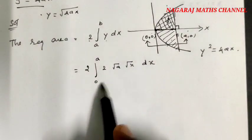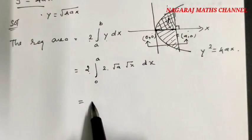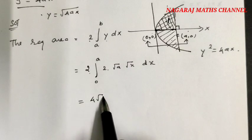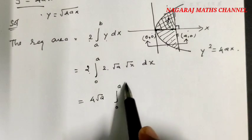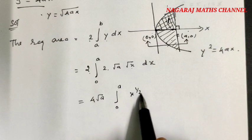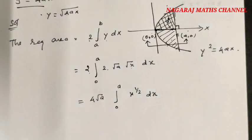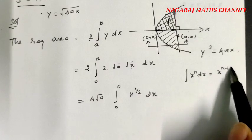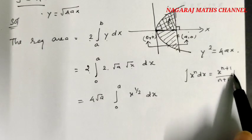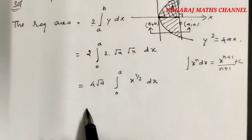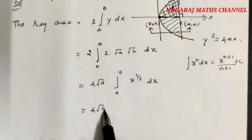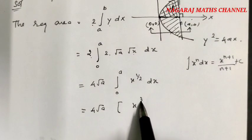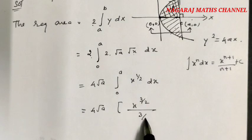Taking the constant outside, this is 4√a times the integral from 0 to a of √x dx, which equals 4√a times the integral from 0 to a of x^(1/2) dx.